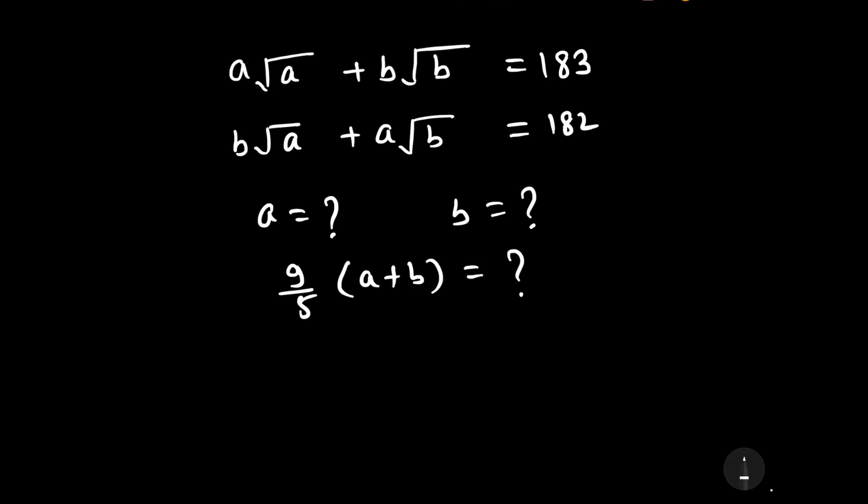You are most welcome to our YouTube channel Saval Bawal. Our question is: a times √a plus b times √b equals 183, and b times √a plus a times √b equals 182. We have to find the value of a and b, and also calculate the value of (9/5) times (a+b).